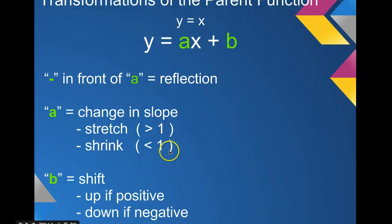On the other hand, if you have a slope that's less than one — say one half, one third, one fourth, or even two thirds — that means you have a shrink. Your line is getting less steep. It is shrinking back down to the x-axis. Think of the x-axis as the ground — it shrinks back down to the ground.